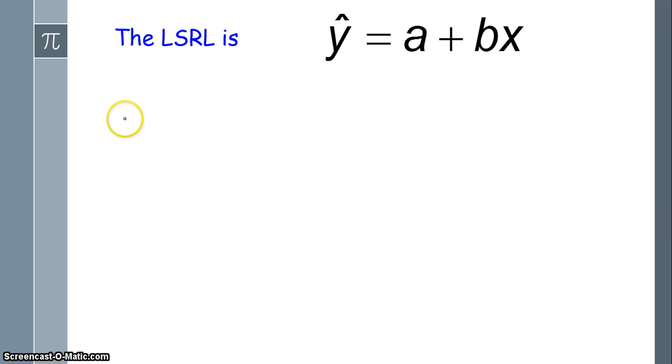Alright, this is the format for writing a regression line. Notice that this little caret, or this arrow on top of the y? Yeah, that's a hat. It is a hat. H-A-T. We even say it's y hat.